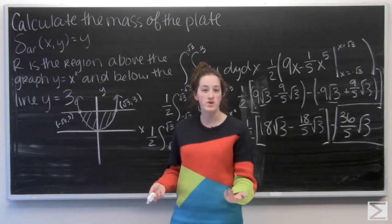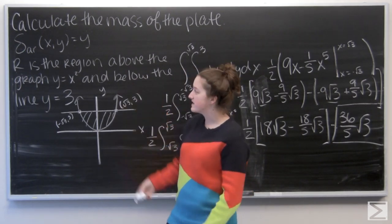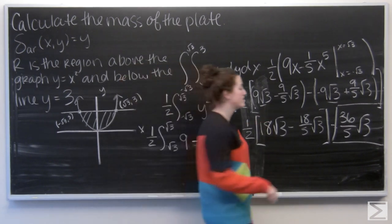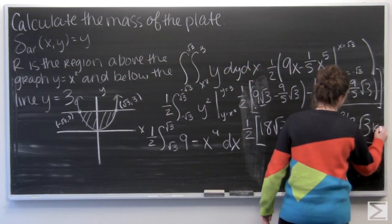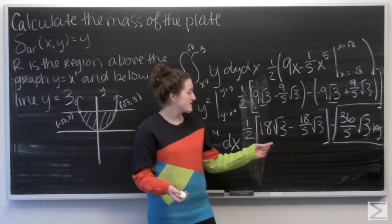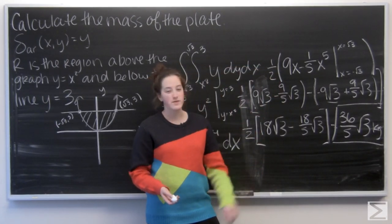So let's think about our units. Area density is given in kilograms per meter squared. So once I integrate over the region, I'm left with just kilograms as the units for my answer. So now we know the mass of this plate is 36 over 5 times the square root of 3 kilograms.